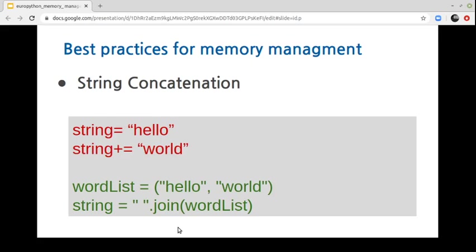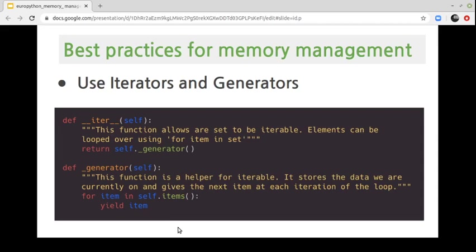When possible, avoid using the plus symbol for string concatenation because strings are immutable. Every time you add an element to a string, Python creates a new string and allocates it to a new address. Instead of using the plus symbol, it's better to use the join() method that provides an iterable object as a parameter, or the format() method, which can also be used for string concatenation.